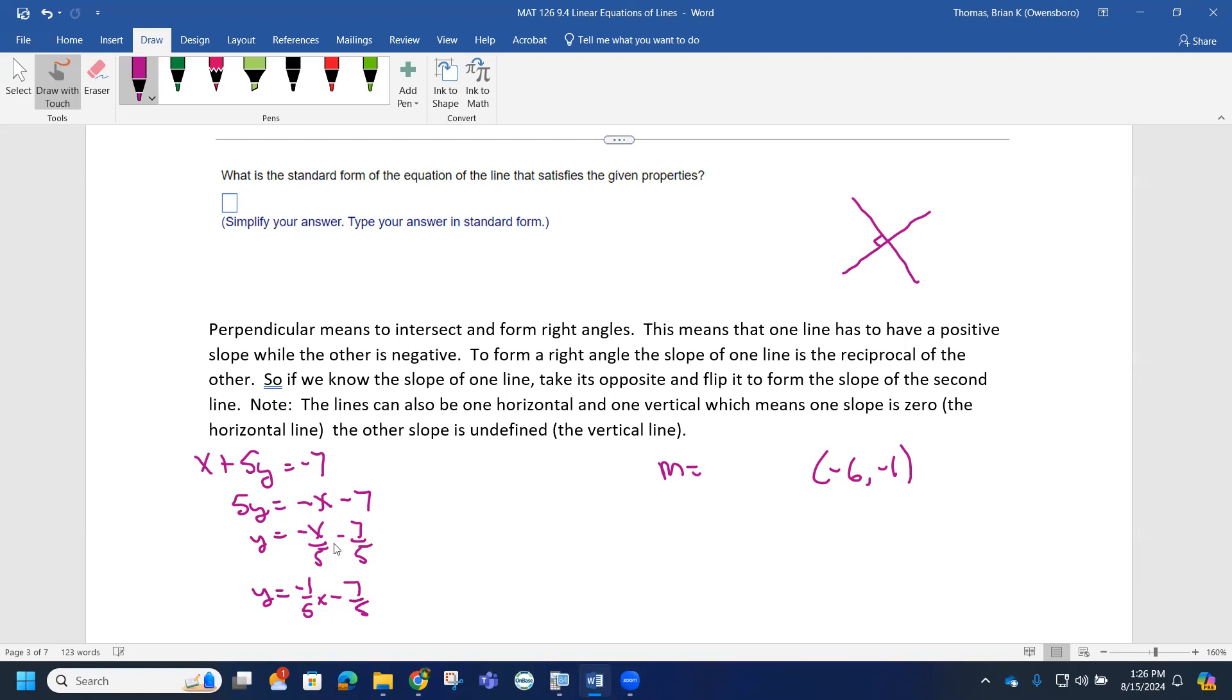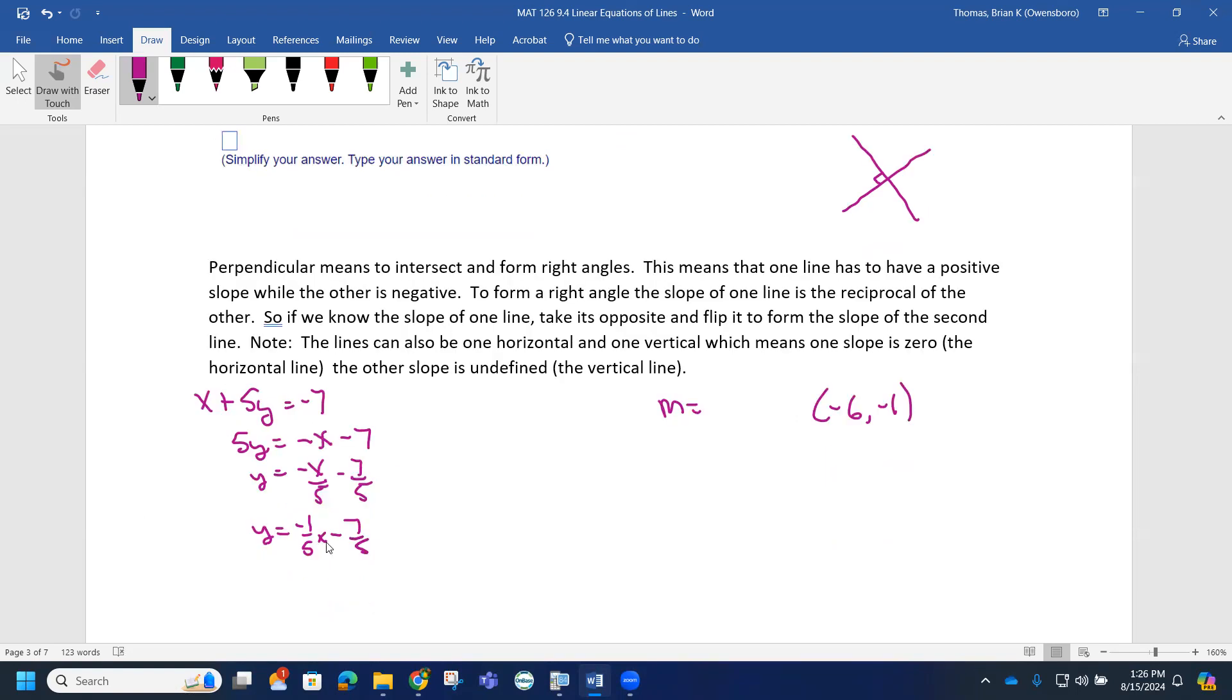The only thing I care about for this equation is its slope. So the slope of this line is negative 1 fifth, which means the slope of my line has to be the reciprocal of that. So if I flip it, that's 5 over 1, but you also have to change the sign, which means it's going to become a positive 5. So the slope of my line has got to be a positive 5 if I flip and take the opposite of it.